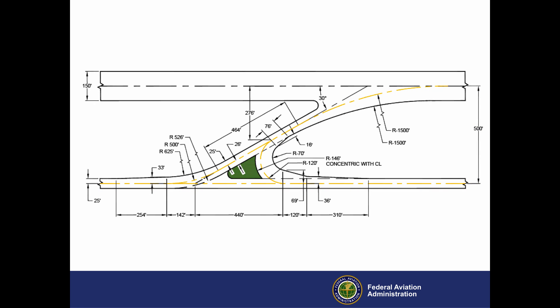If the airplane design group is ADG-5 and the airport elevation is above 6,560 feet, the minimum distance — once again based on airspace requirements — is 500 feet, as shown in this drawing from the FAA website.